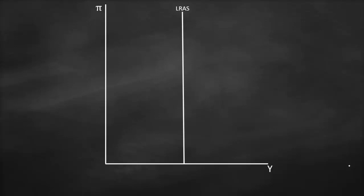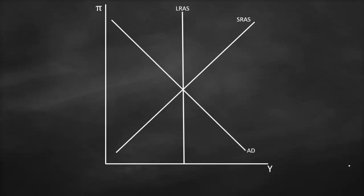If we would like to draw the aggregate demand-aggregate supply model, this will be our x-axis, which is our output level, and this will be our y-axis, which is inflation. This is our long-run aggregate supply, which is always a vertical line because in the long run we reach our potential output, or full employment output, or natural rate of output, which means our unemployment rate is at its lowest, which is called NAIRU, or natural rate of unemployment. Our short-run aggregate supply curve is upward sloping and our aggregate demand is downward sloping.